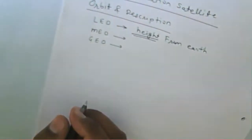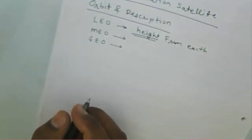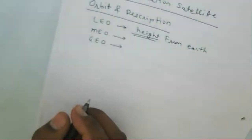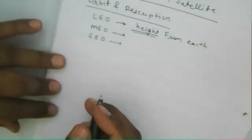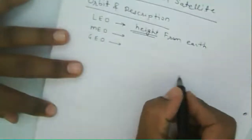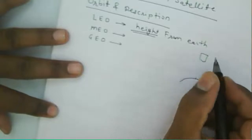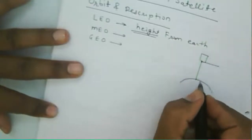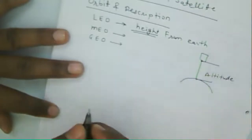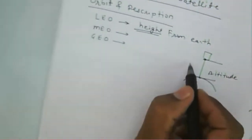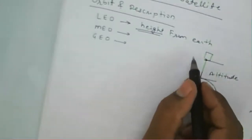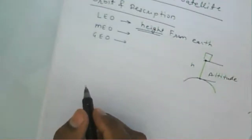The orbit revolving around the Earth is defined by altitude. For a Low Earth Orbit, the altitude is approximately 100 to 200 kilometers. The altitude is measured from the Earth to the satellite — that distance is what we call the height. Based on that, there are three different satellite orbits.